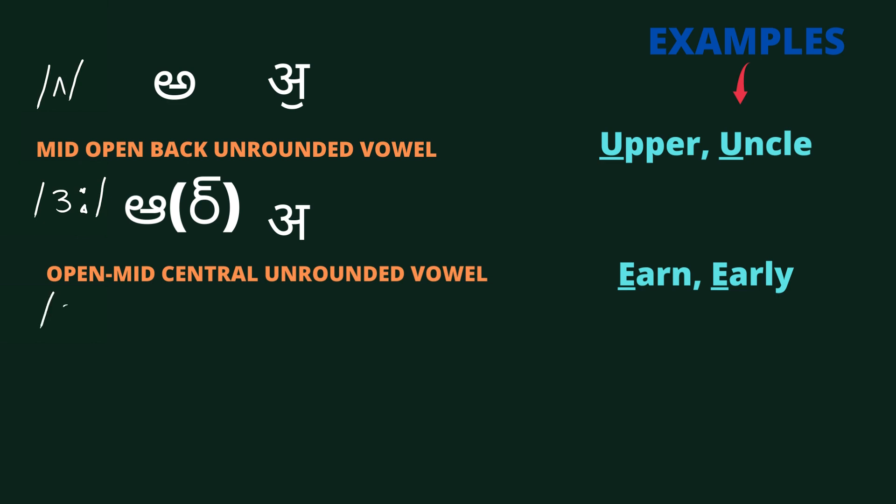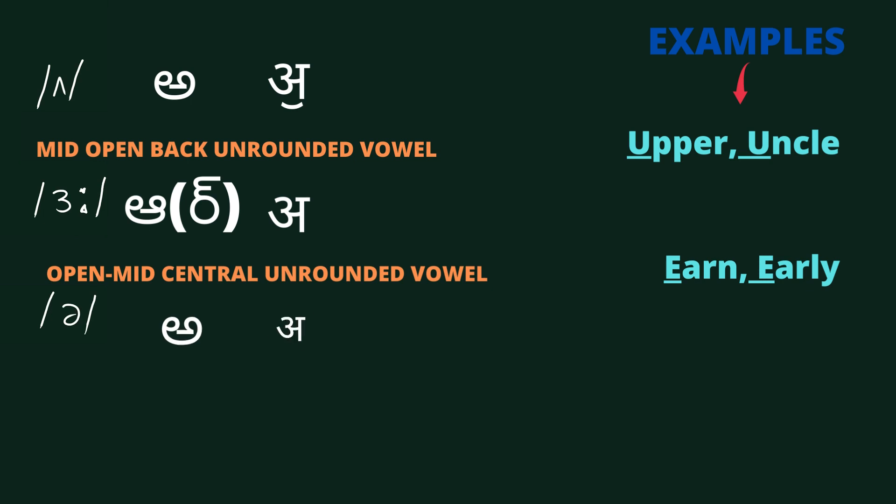This is pronounced as /ə/ — the schwa. It is an open-mid central unrounded vowel. Examples are: another, arrest.